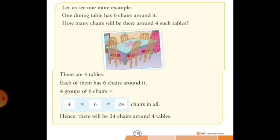Each of them has 6 chairs around it. So 4 groups of 6 chairs equal to 4 into 6. So there are 4 tables. So 4 into 6 is equal to 24. So totally there will be 24 chairs around 4 tables.